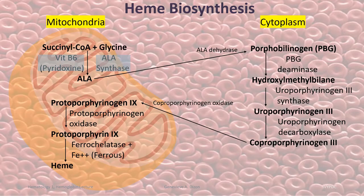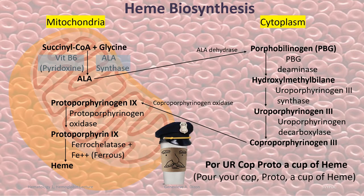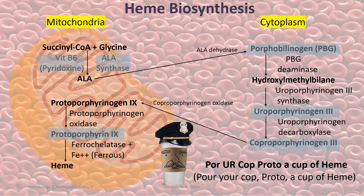Mnemonics may be used to remember the steps of heme biosynthesis. One mnemonic is: Pour Your Cop Proto a cup of Heme. The first word 'Pour' refers to porphobilinogen. 'Your' is uroporphyrinogen 3. 'Cop' is coproporphyrinogen 3. 'Proto' is protoporphyrin 9. And 'Heme' is the final product.